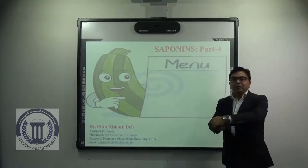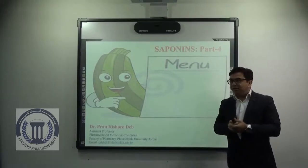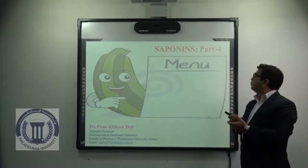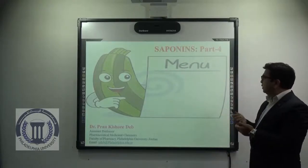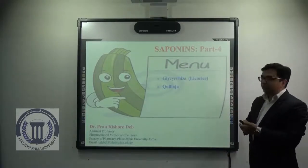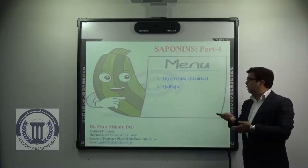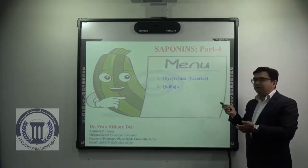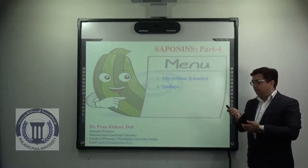Hello everyone, how are you? Today in this lecture we are going to discuss the fourth part of saponins. We will be covering two more species: Glycyrrhiza, which is also known as licorice, and Quillaja.